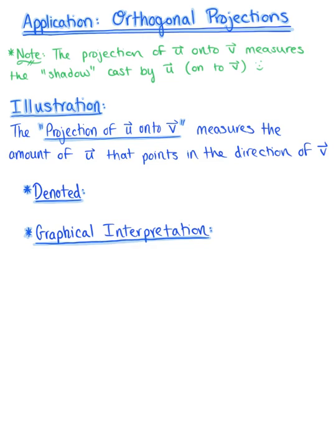Here we're looking at an application of the dot product: projections. In simple terms, I want you to think about the projection of a vector u onto vector v as the shadow that vector u is casting onto vector v.